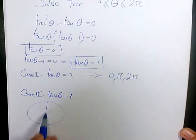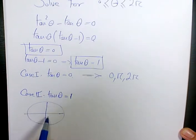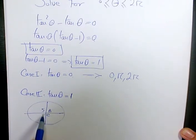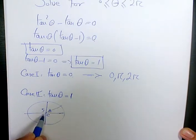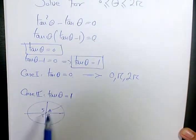and tan theta equals to one in two parts. One based on the CAST rule, tan is positive in quadrant one and in quadrant three. All and tan, so these are positive.